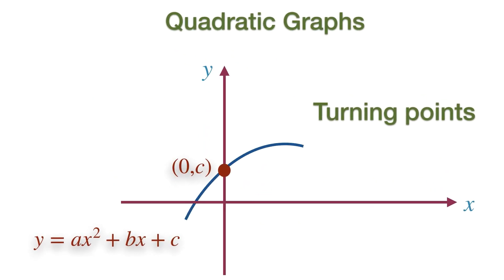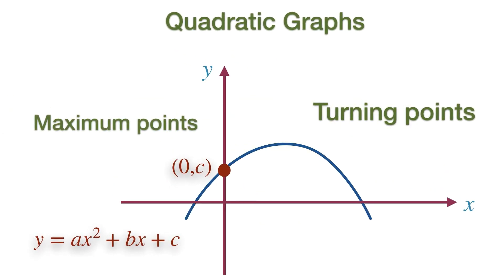When the parabolic curve is a sad face, the graph has the maximum value. This is the highest point on the curve, and if the point has the coordinate (2, 6), then the highest value is the Y coordinate, which is 6 in this case, and this occurs when X is 2.